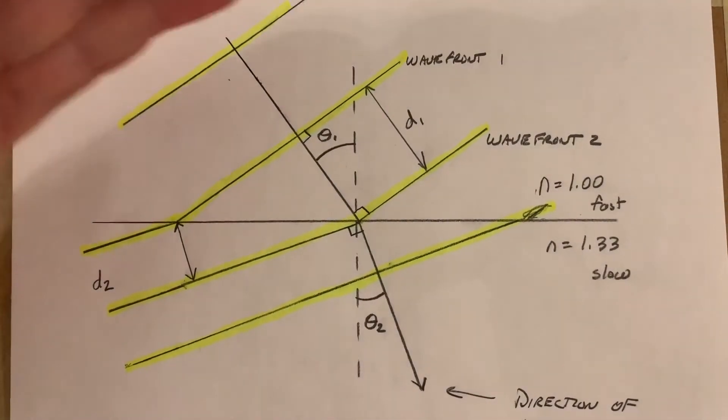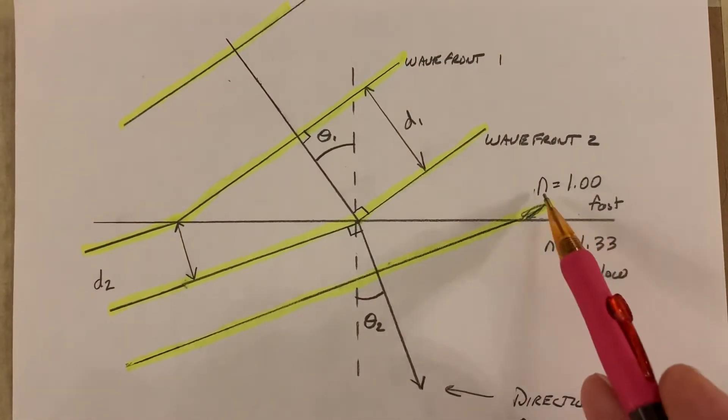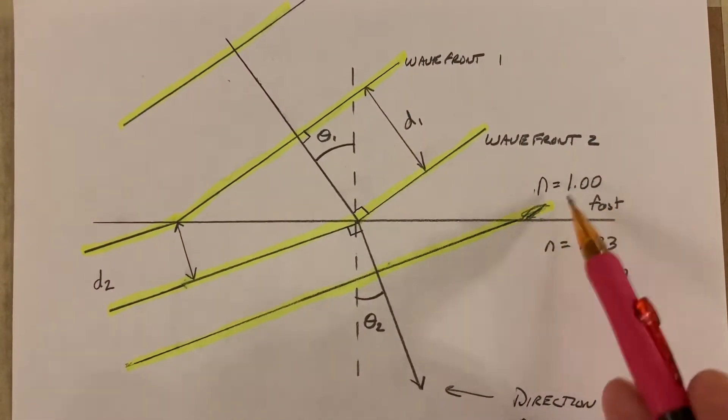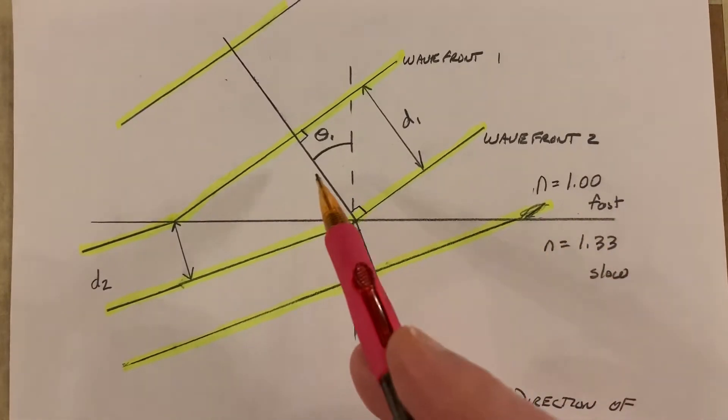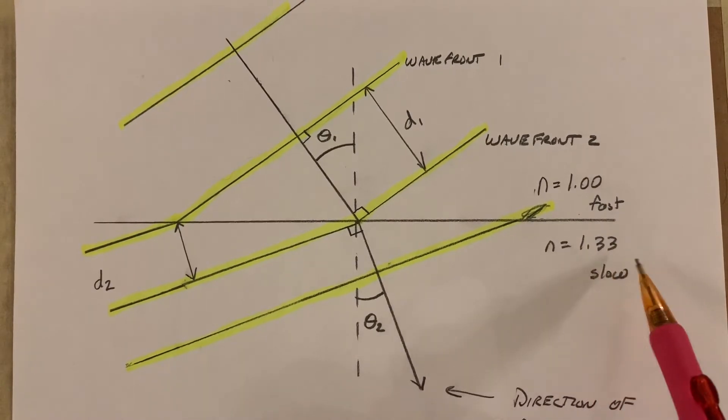So let's picture light going from a medium like air or a vacuum where the index is 1, so it's moving at 3 times 10 to the 8 meters per second, and moving into a slower medium. Let's say it's water, n equals 1.33.